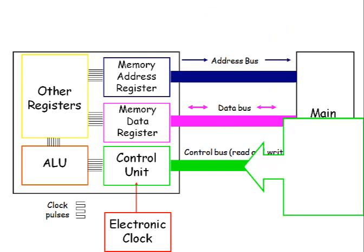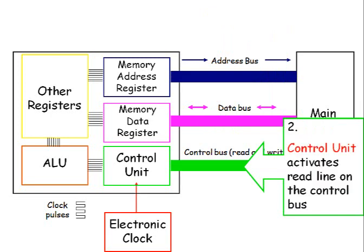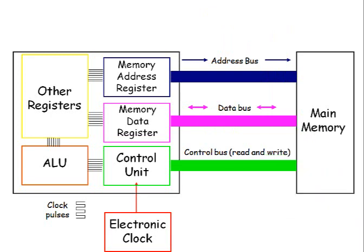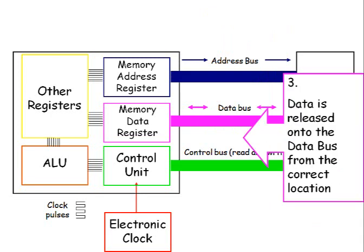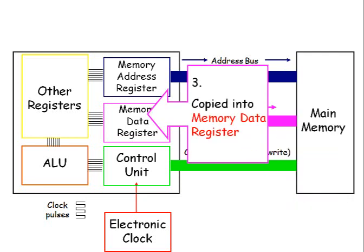Next, because it's carrying out a read operation, it doesn't know anything about the data yet. So the control unit activates the read line on the control bus — that sends a signal to the rest of the computer system, and the location info that the address bus points at. A copy of the data from that memory location is released onto the data bus, and it's finally copied into the memory data register where the processor can access it, carry out calculations, comparisons, update it and so on.